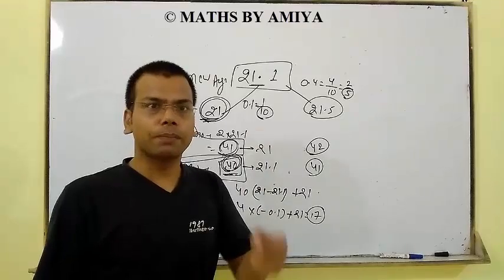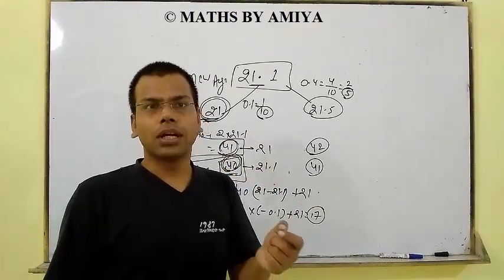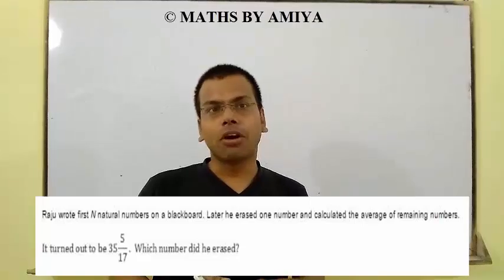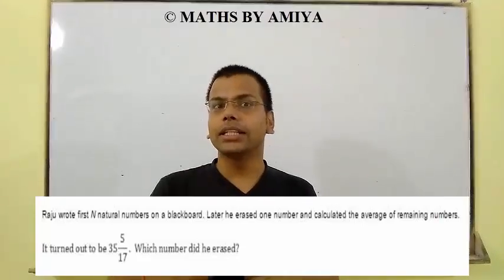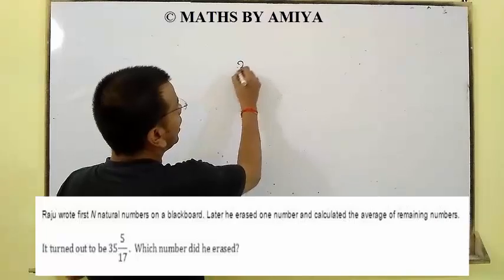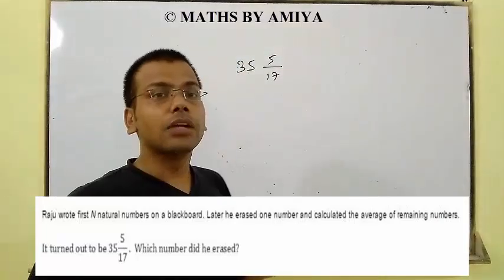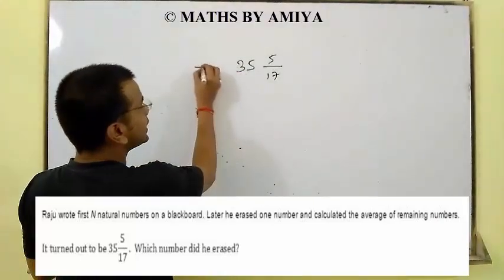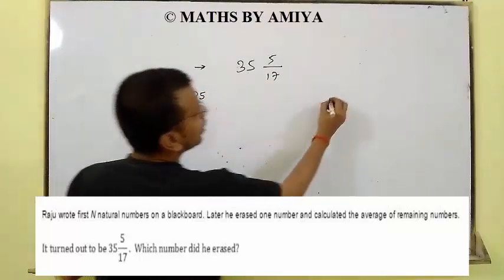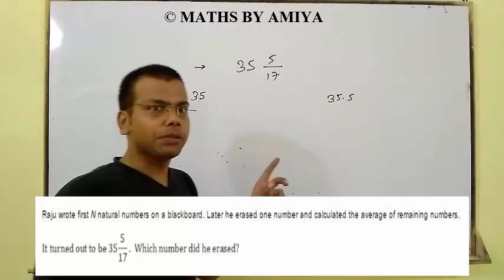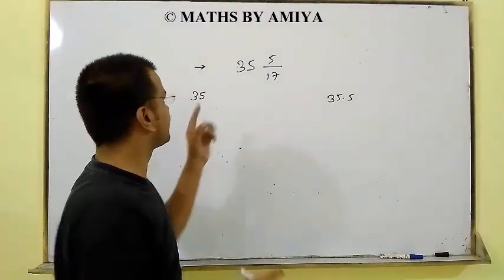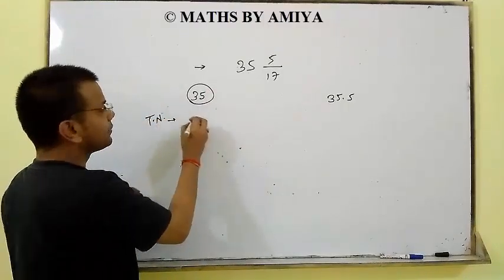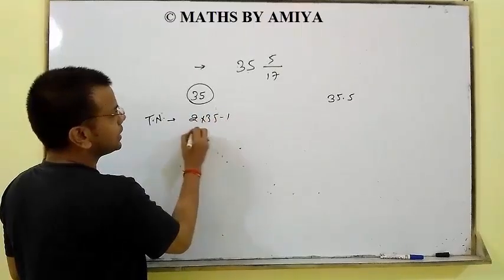Even if you have any doubt, for better understanding I am solving a question posted by you. The question is: you wrote the first n natural numbers on a blackboard and erased a number. After erasing, the new average becomes 35 and 5/17. Then which number was removed? This is our new average. After removing the number, the old average should be either 35 or 35.5. If 35 was our old average, total old numbers = 2×35 − 1 = 69.